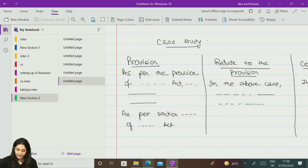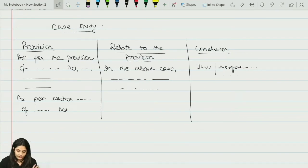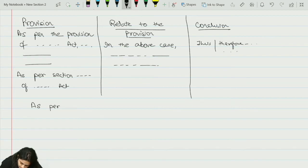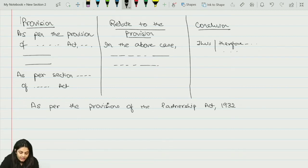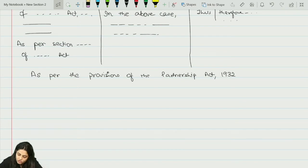Coming back to the answer, how will I write it? I have to quote about partner by estoppel. As per the provisions of the Partnership Act, please be careful, Act should be capital, 1932. If you see here, I had written provision, but here I am not renaming the paragraphs. I don't name the paragraphs. The reason I wrote here provision earlier, because otherwise how will I explain it to you? But I don't write in the answer, I don't name my paragraphs. I wrote it in tabular form just for you to understand. The answer has to be written in paragraphs.